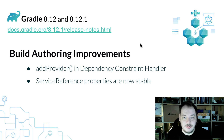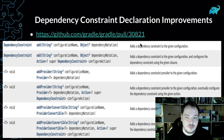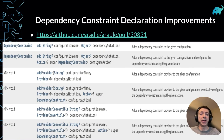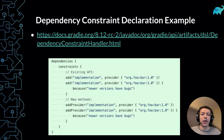The next topic is build authoring improvements, and there we have two major things. The first is that we have quite a lot of new APIs introduced to dependency constraint declarations. We've added new methods to the dependency constraint handler interface that allow using providers as the source of dependency constraints. Previously this was possible, but it was not obvious in the weakly typed methods in the old API. These new methods are visible in IDE auto-completion and should encourage plugin authors to supply constraint versions and coordinates lazily using the provider API, helping avoid accidental eager evaluations when registering dependency constraints.